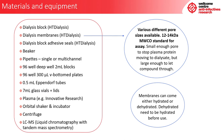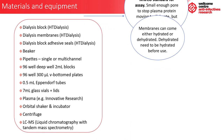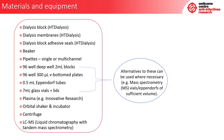You will also need dialysis block adhesive seals, a beaker, pipettes, 96-well deepwell 2 ml blocks, 96-well 300 microlitre V-bottom plates, 0.5 ml Eppendorf tubes, 7 ml glass vials and lids, plasma, an orbital shaker and incubator, a centrifuge, and an LC-MS instrument, which is liquid chromatography with tandem mass spectrometry. Alternatives to these can be used where necessary, for example, mass spectrometry vials or Eppendorf tubes of sufficient volume.